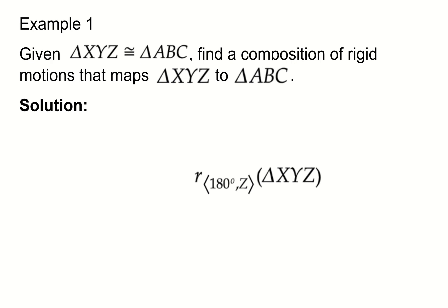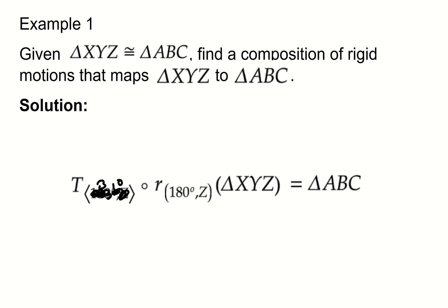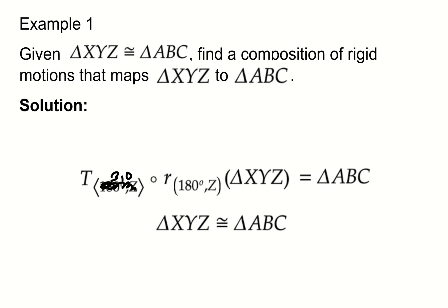So my two transformations are: first, rotate 180 degrees counterclockwise about point Z — not about the origin, but about a specific point in the triangle. Second, following that transformation, translate three units to the right. This composition of rigid motions is a congruence transformation, meaning these two figures are actually congruent. When we transform XYZ we get triangle ABC, and therefore XY is congruent to AB, XZ is congruent to AC, and so on.